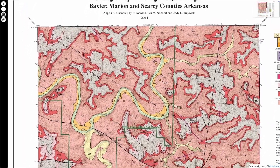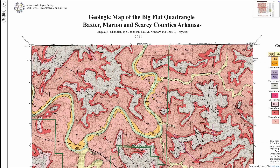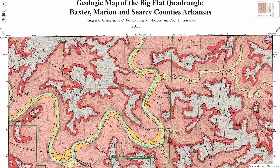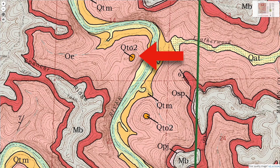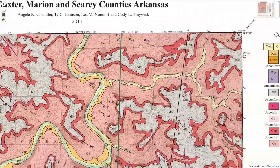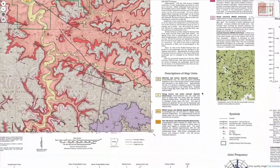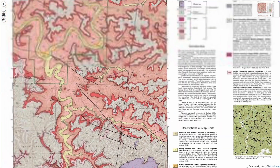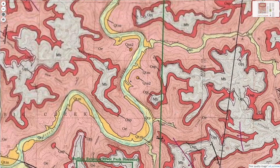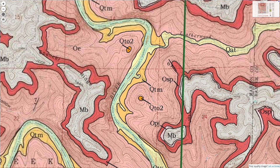Maps like this were certainly a useful reference for the various bedrock units forming the riverside bluffs, but this one also led us to a really cool geologic site. In just a few places, atop isolated knobs, are mapped tiny pockets of this QT02 unit. The map's useful unit descriptions define these as very old terrace deposits — essentially remnants of gravel bars left over from when a much younger Buffalo River hadn't cut all the way down to its modern level, but instead was flowing through a valley whose base was up at the level of these now isolated knobs.